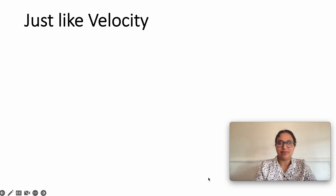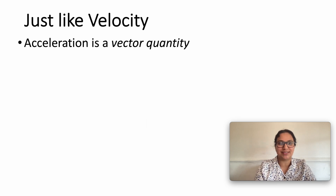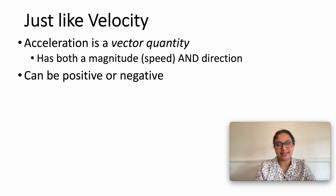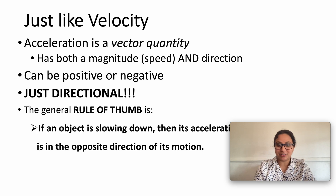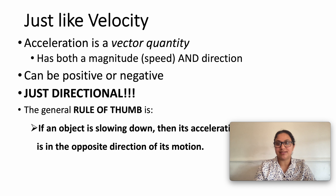Just like velocity, acceleration is a vector quantity — it has both magnitude and direction. Acceleration can be positive, negative, or even zero. If an object is slowing down, its acceleration is in the opposite direction of its motion. Acceleration occurs when an object changes its speed, direction, or both.